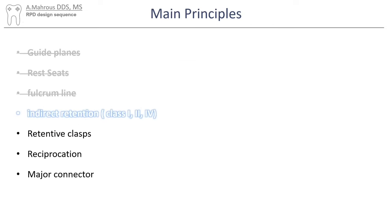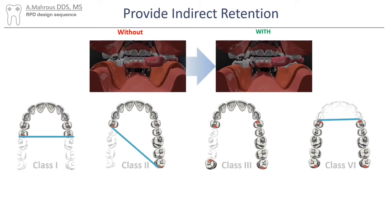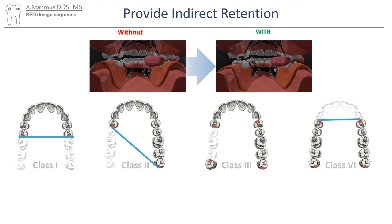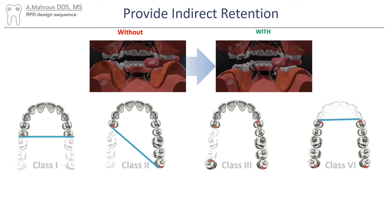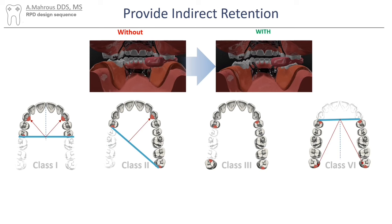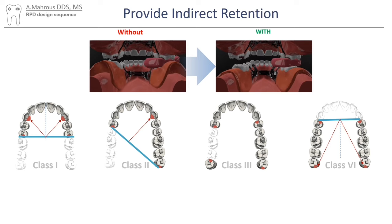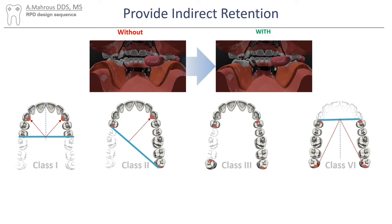The next step is to provide indirect retention for class 1, 2, and 4. Indirect retention prevents the tissue-away movement of the RPD denture base during function. For more information on indirect retention, please find the video linked here. Indirect retainers should be placed on a tooth that is located perpendicular to the fulcrum line and as far away as possible from it. In certain situations like class 1 and 4, this is not possible due to the position of the fulcrum line.